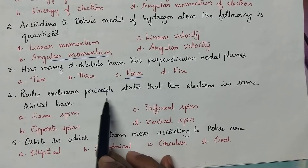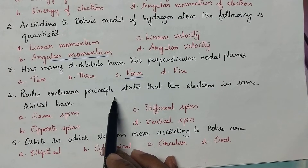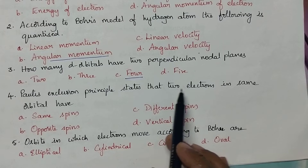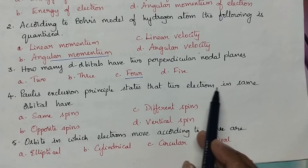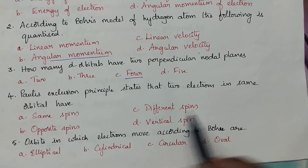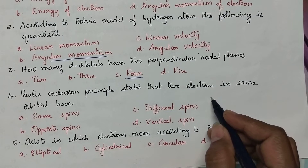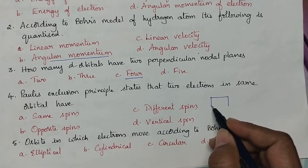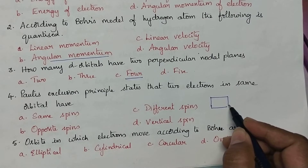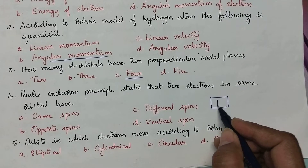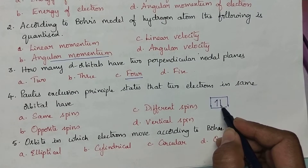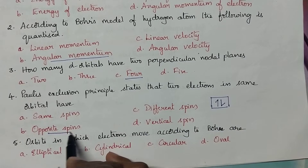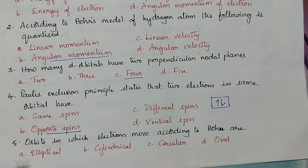Pauli's exclusion principle states that the two electrons in the same orbital have: According to Pauli's exclusion principle, the two electrons in the orbital will have two opposite spins.